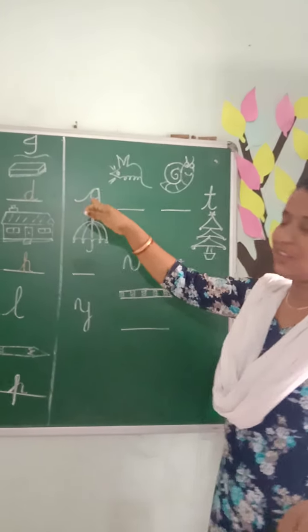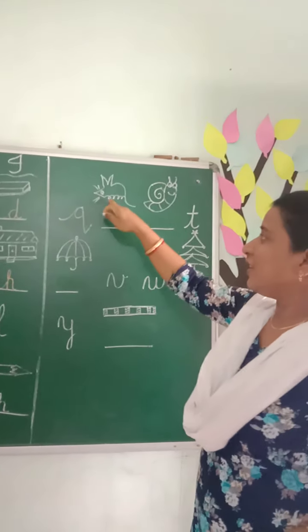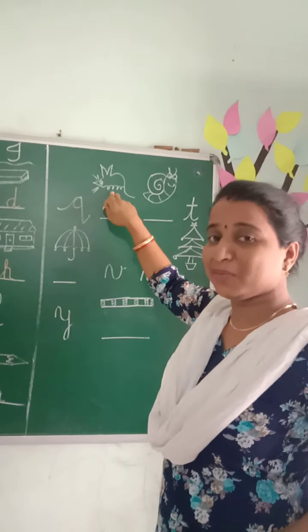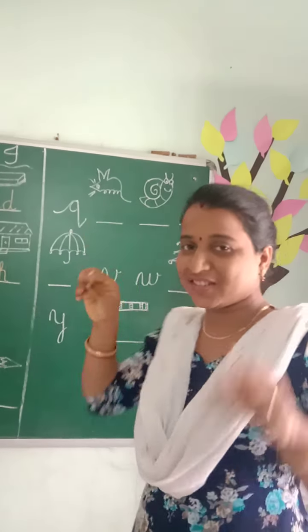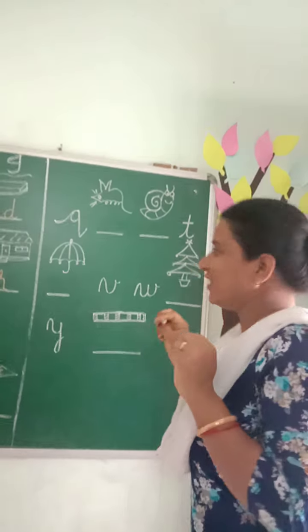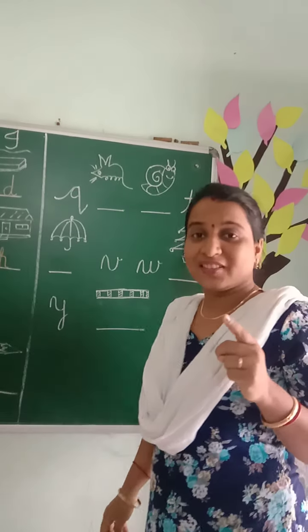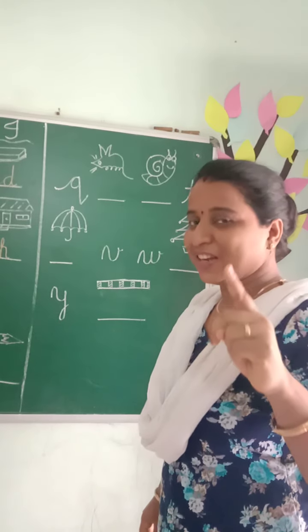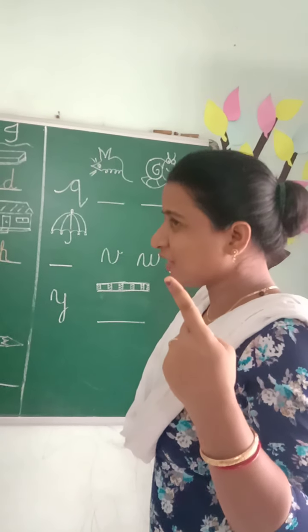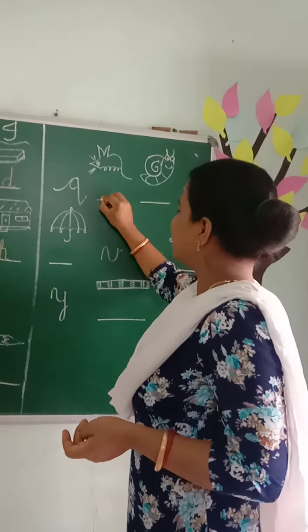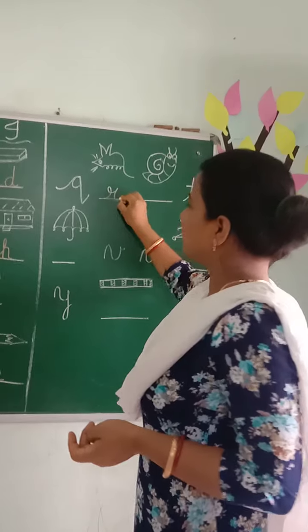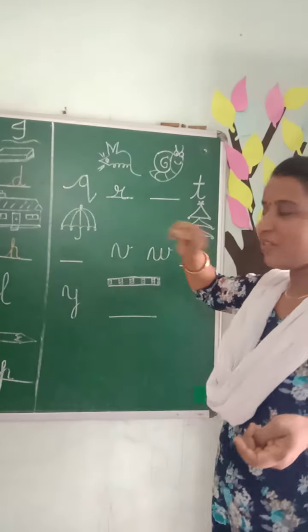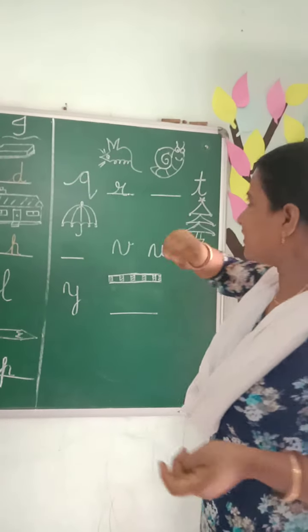Then come to Q. Now again here is a picture. Which picture is this? It is red. It starts from which letter? R. Small cursive R. R for red.